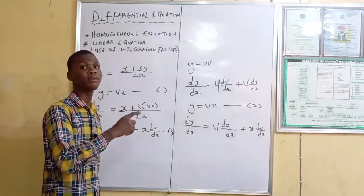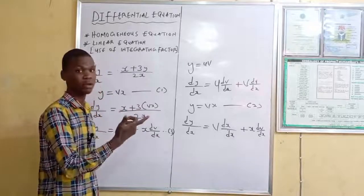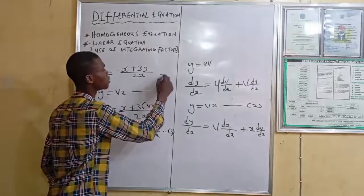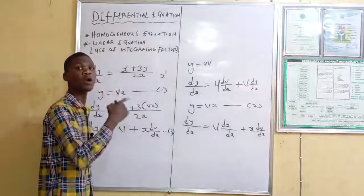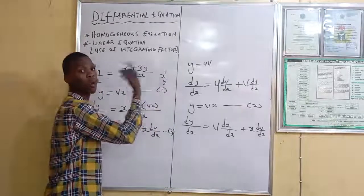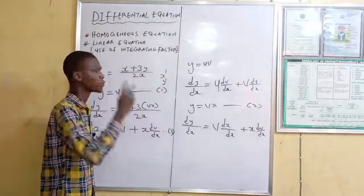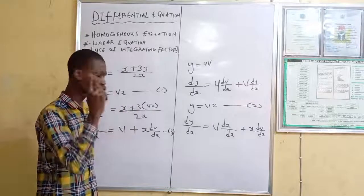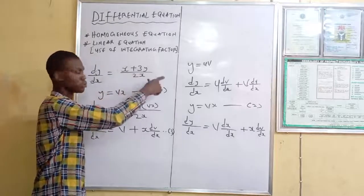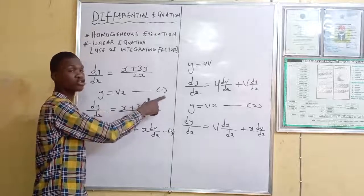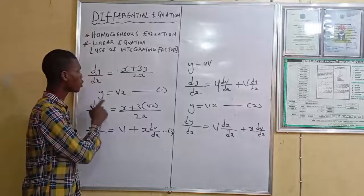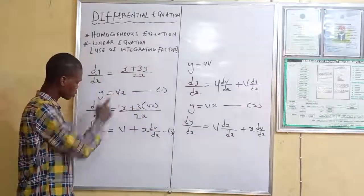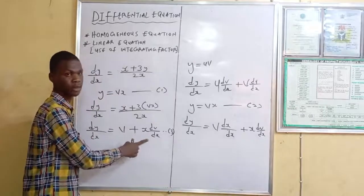To summarize: identify the power of the variables involved — here x and y both have power 1, since x to the power 1 is just x and y to the power 1 is just y. Because their powers are the same, use the homogeneous equation. Then substitute y = vx (equation 1), and from the product rule we derived that dy/dx equals v plus x·dv/dx (equation 3).